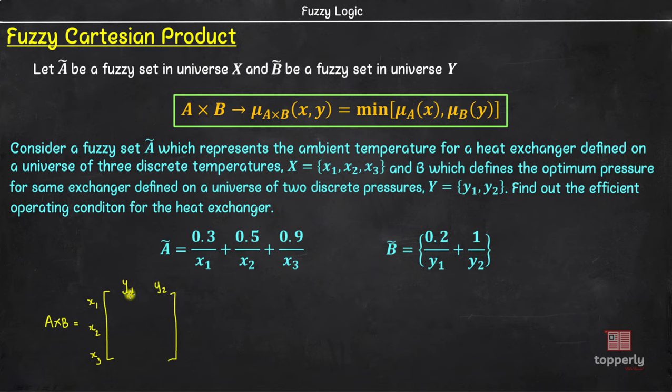Now, the membership value of ordered pair x1, y1 is given by the minimum of membership value of x1 in set A and y1 in set B that is the minimum of 0.3 and 0.2 which is 0.2. Similarly, for x1, y2 we will find out the minimum of membership value of x1 and membership value of y2 which is minimum of 0.3 and 1 which is 0.3. If you follow the same way, we get 0.2 for x2, y1, 0.5 for x2, y2, 0.2 for x3, y1 and 0.9 for x3, y2.